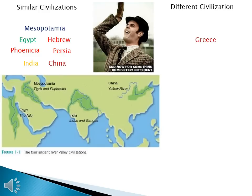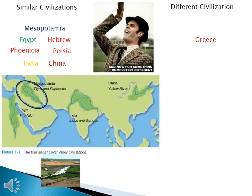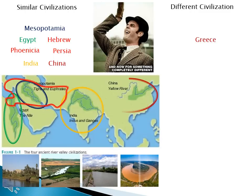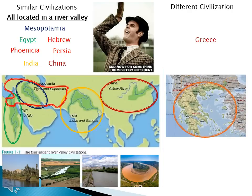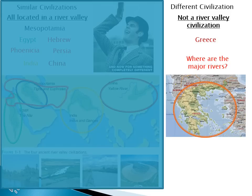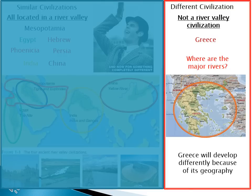Let's look at the geography of the civilizations we've already studied to see why they are similar. Mesopotamia is on the Tigris and Euphrates Rivers. Egypt is on the Nile River. The Hebrews, Phoenicians, and Persians live in areas on or near the Nile or the Tigris and Euphrates Rivers. India is on the Indus and Ganges Rivers, and China is on the Yellow River, eventually migrating to the Yangtze River. All of these civilizations are located on rivers or in river valleys. Now, where are the major rivers in Greece? There are none. Greece is not a river valley civilization, so unlike the others, Greece will develop differently because of its geography.